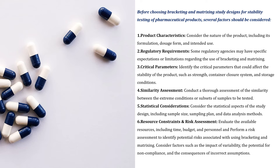So if you're planning to use bracketing and matrixing for stability testing in pharmaceuticals, there is a lot to consider. These include product characteristics like formulation and dosage form, regulatory requirements, critical parameters affecting stability such as strength and storage conditions, similarity assessment between extreme conditions or sample subsets, and statistical considerations like sample size and data analysis methods, as well as resource constraints.